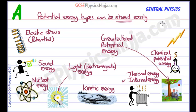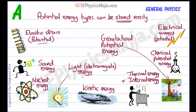We've got a little bolt of lightning — this is electrical energy. We can store electrical energy, so we can call it electrical potential energy. So there we have nine types of energy, and four of them can be easily stored, so we would describe them as potential energy.